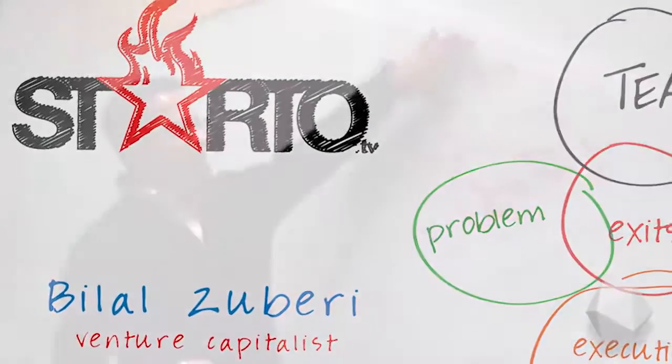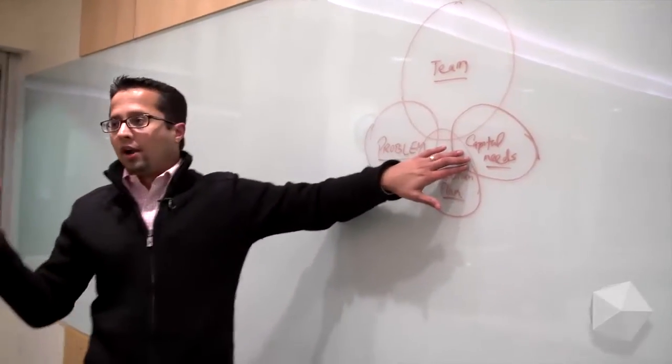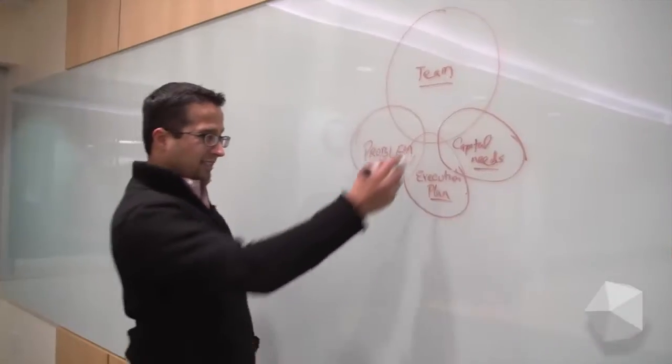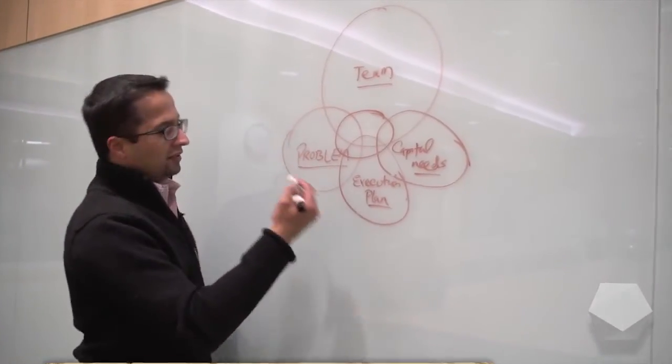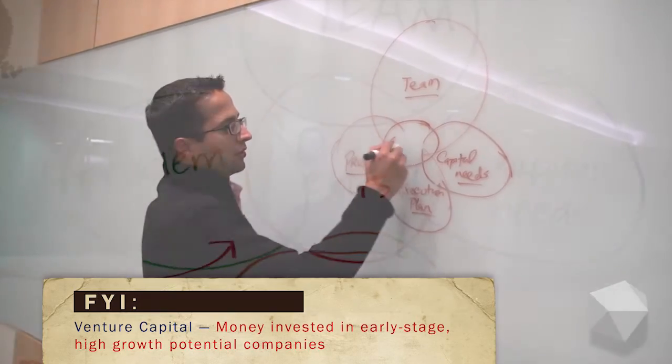When we look at an investment: great team, big problem, great execution plan. But if they're gonna require $500 million to get there, it's probably not an investment we can make. And the last thing that VCs think about but don't talk about a lot is exits.